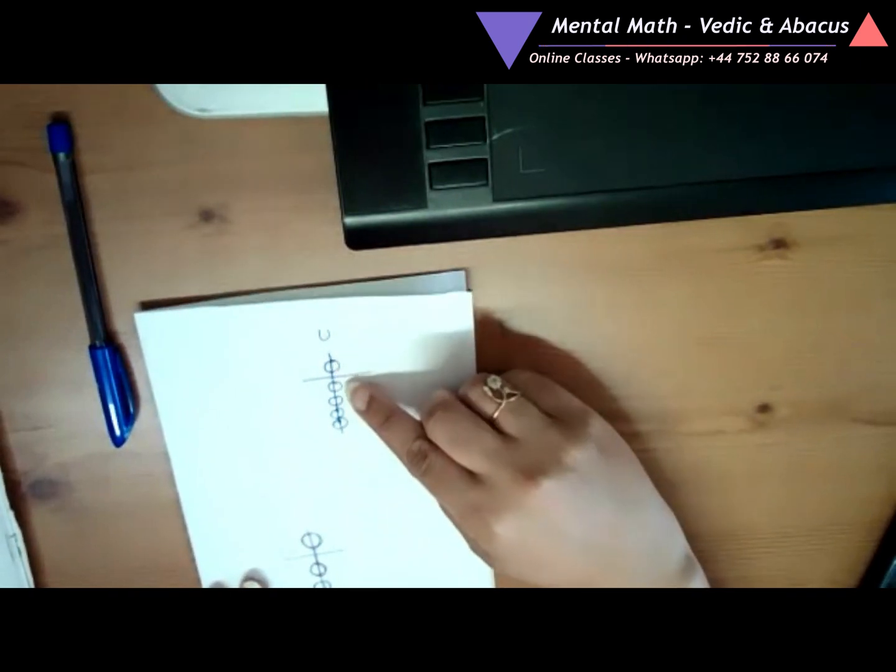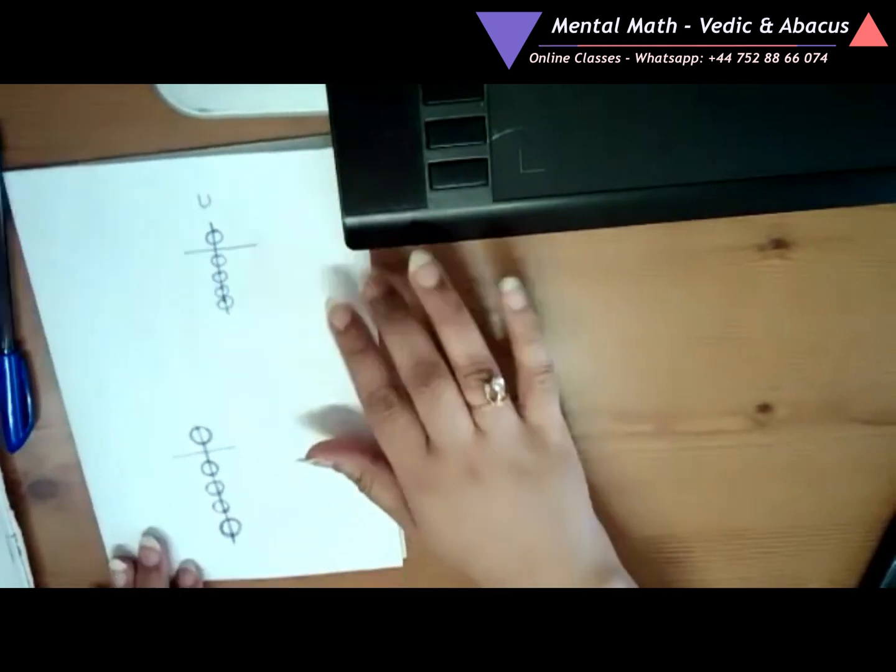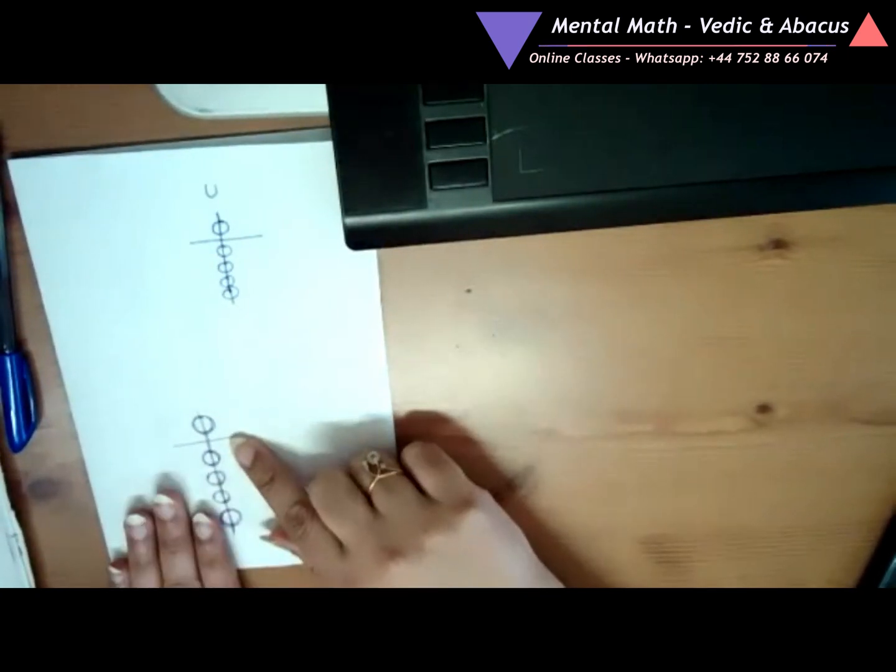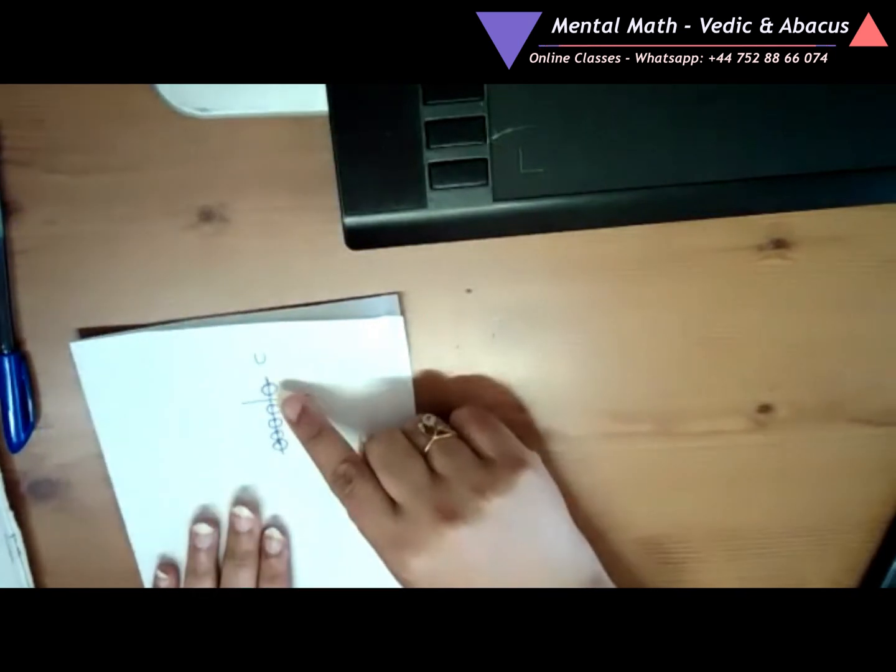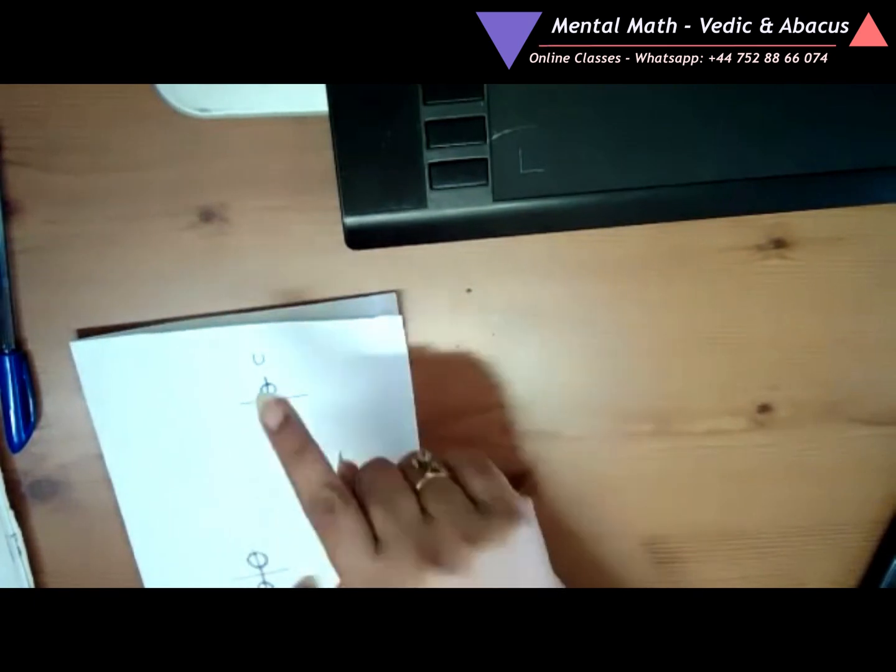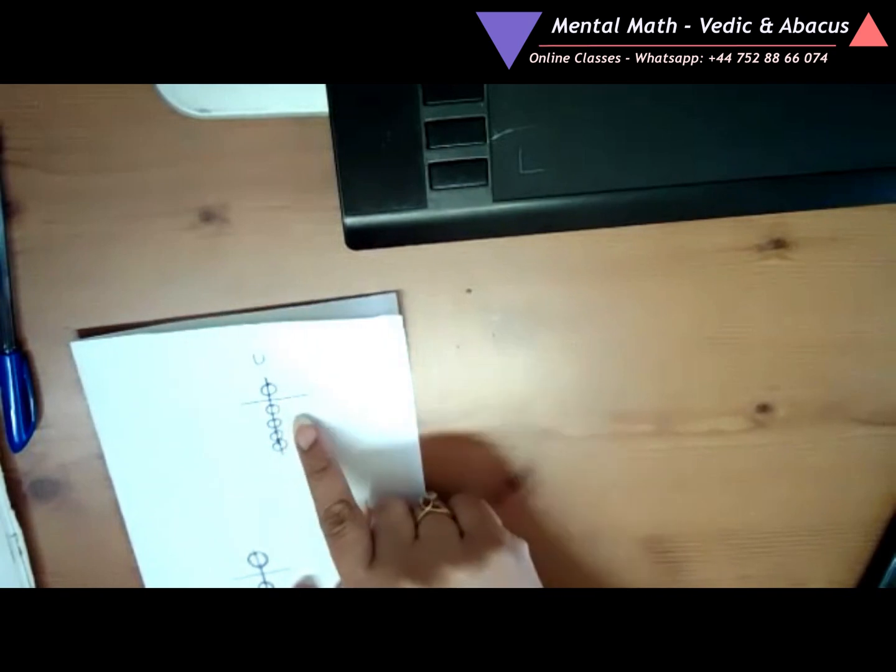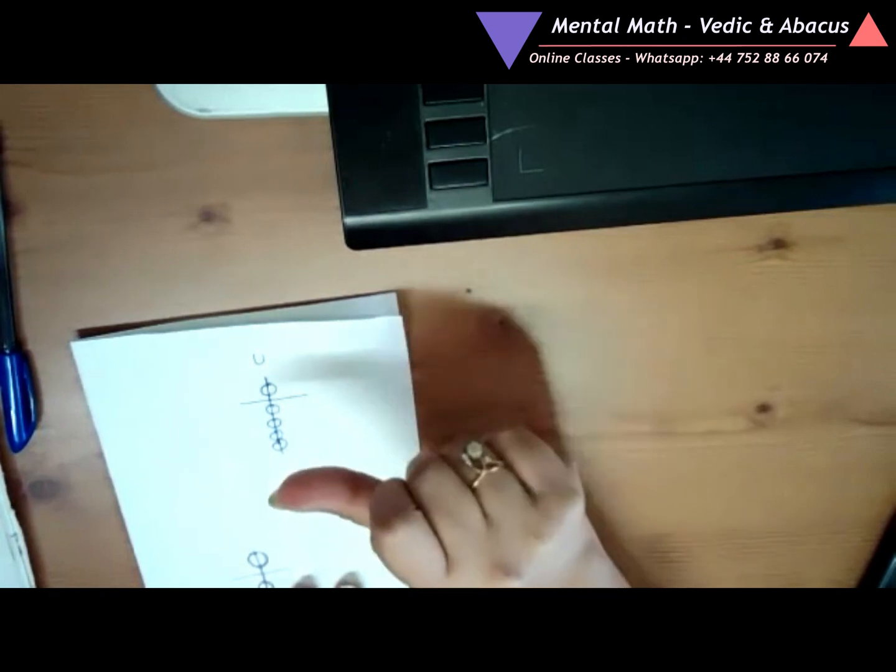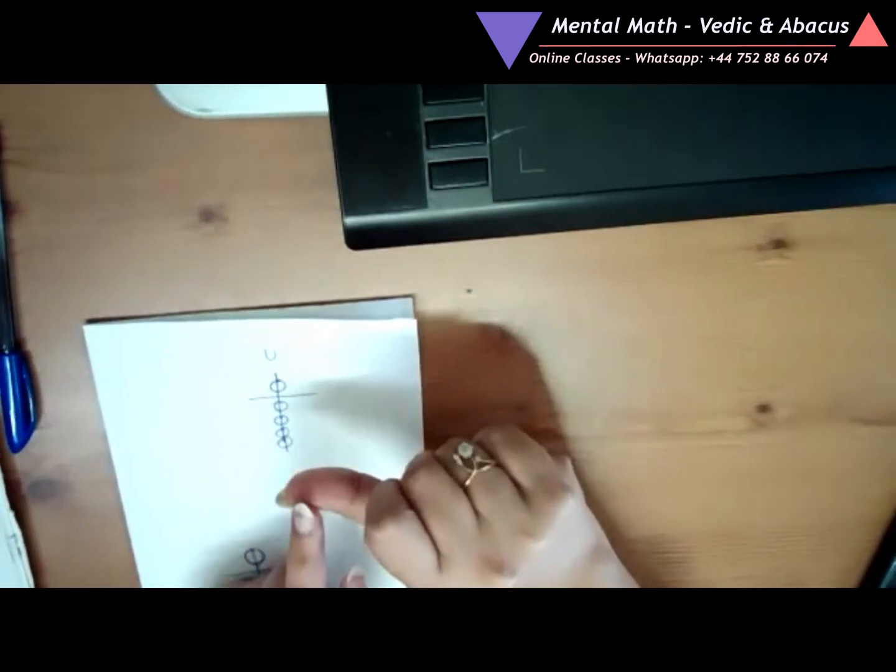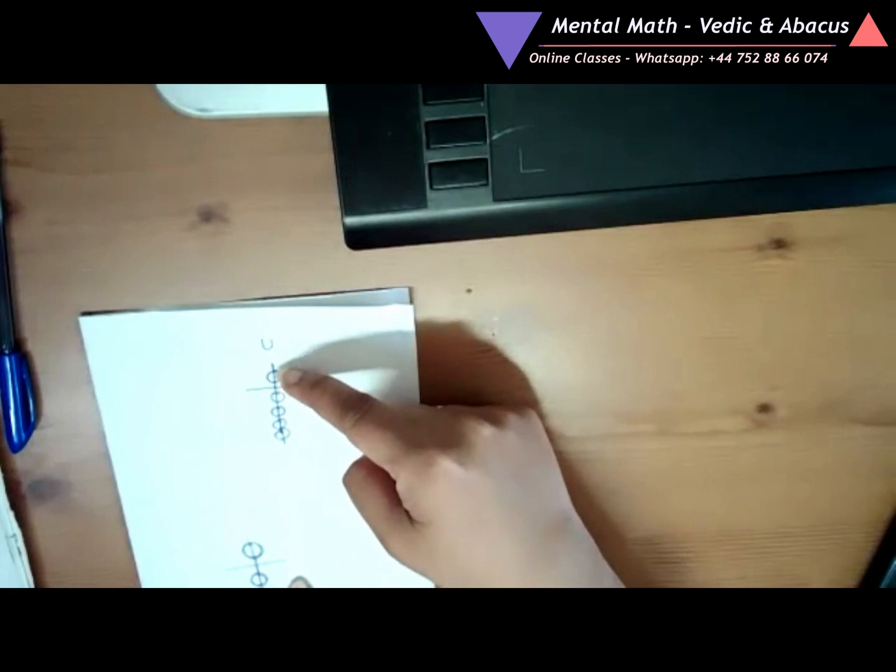Okay, now this is the upper bead, and these are all lower beads. The value of the upper bead is 5. The value of the lower bead is 1. We are going to use the thumb for the lower beads and the index finger for the upper bead, and a combination of finger and thumb for the combination numbers.